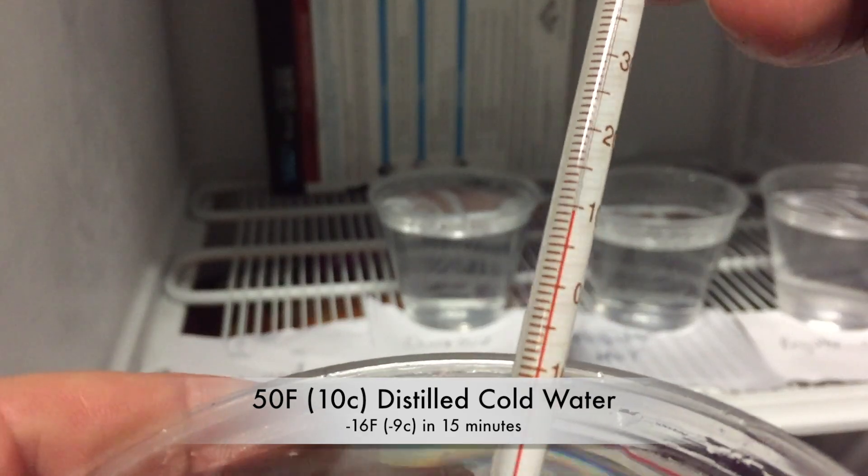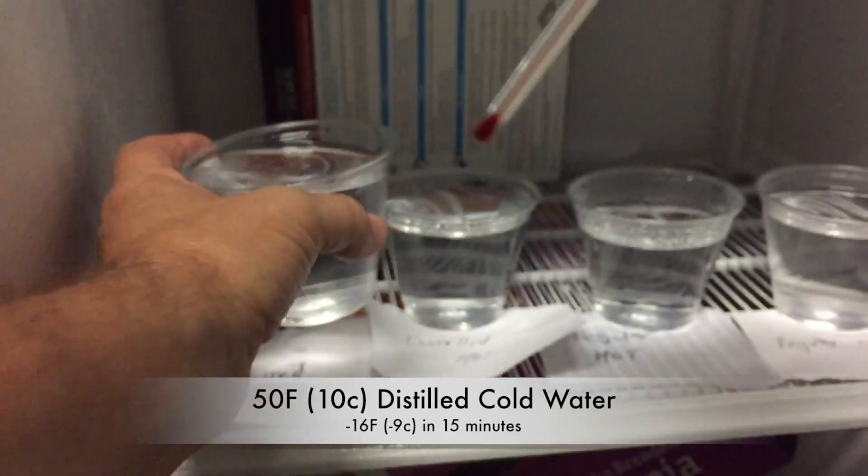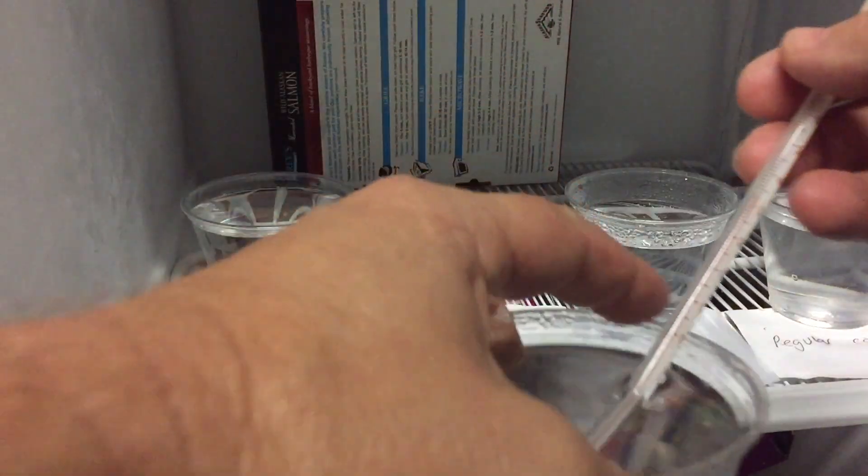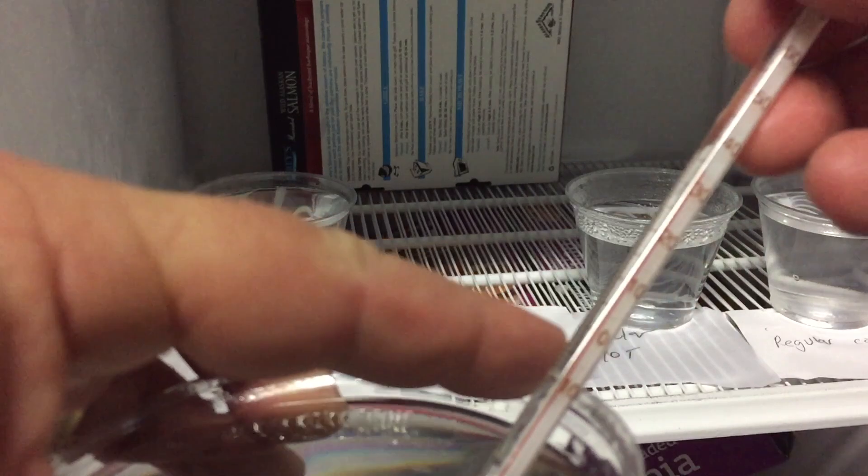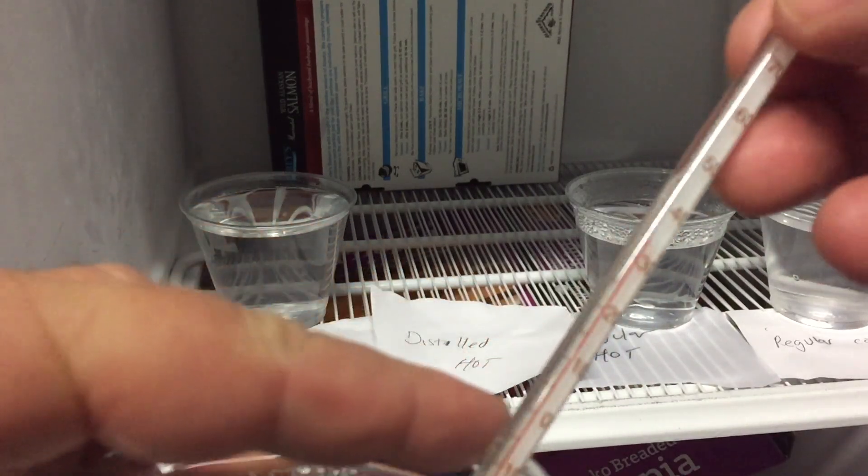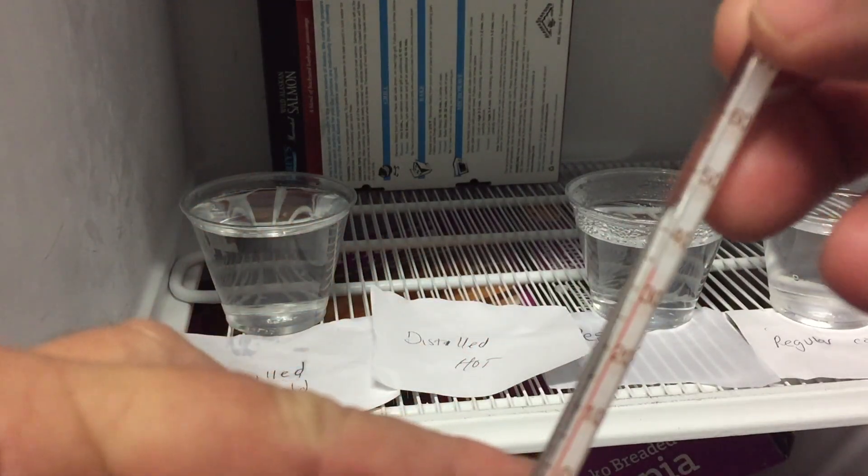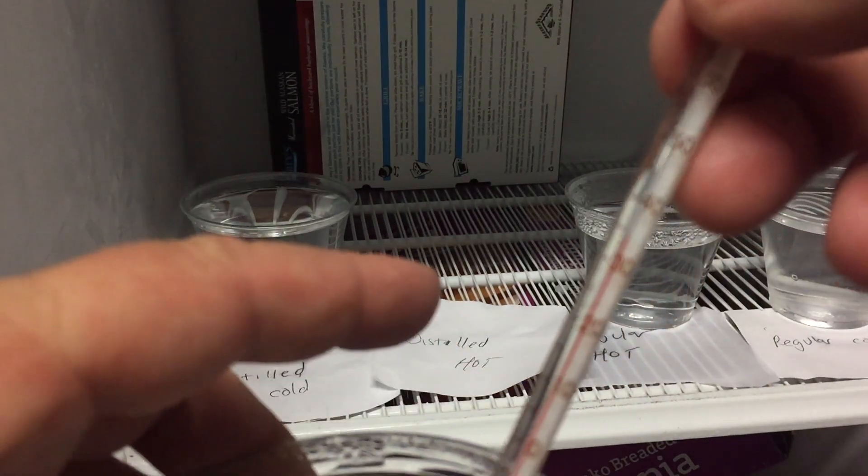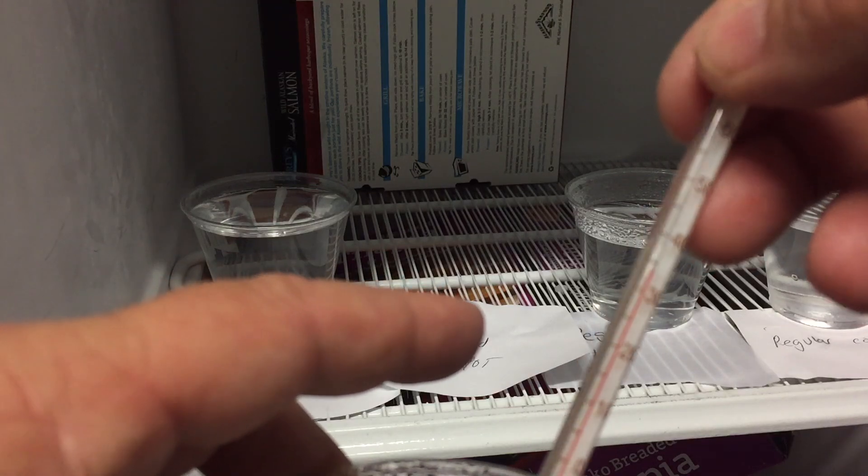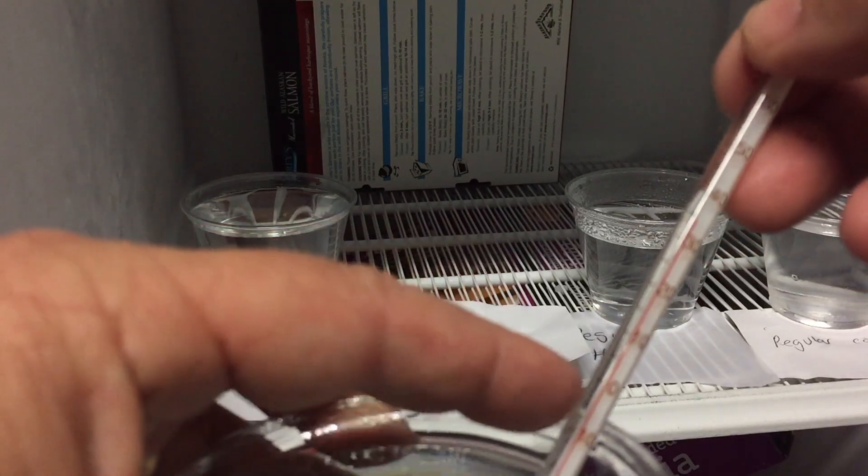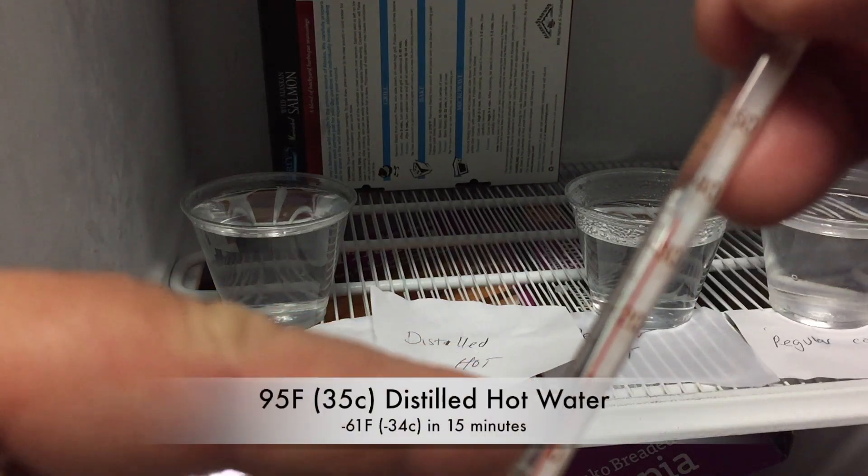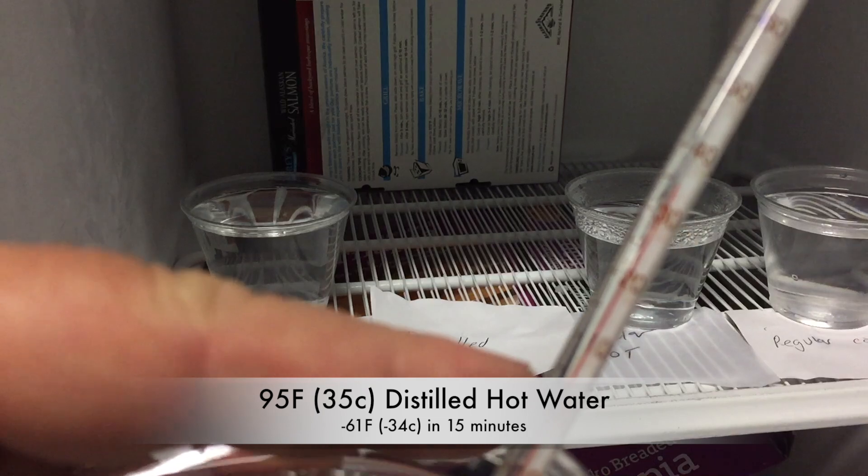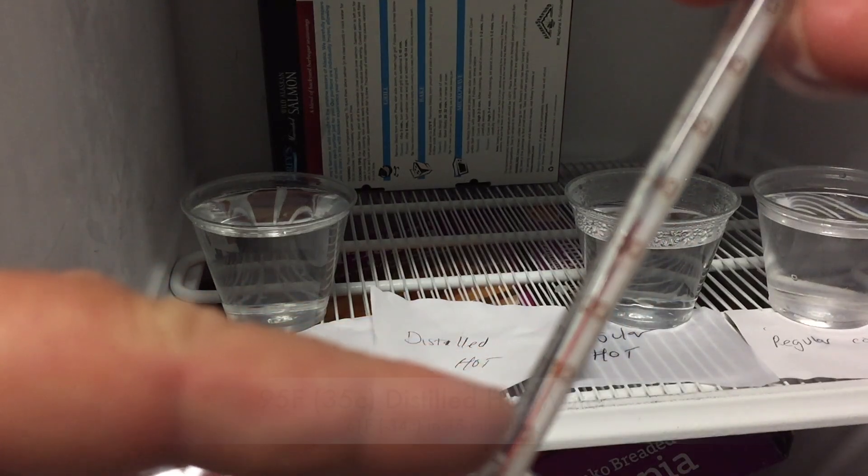So here we are checking the temperatures. This is the distilled cold water. You can see it barely dropped a little bit, not as much as the hot waters. The distilled hot water here dropped drastically, and same with the regular hot water as you'll see. It really came down really fast. Therefore, maybe this myth about hot water seems to freeze faster than cold water might be true. We'll see if we find out.